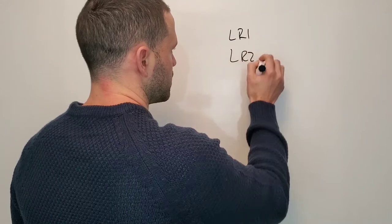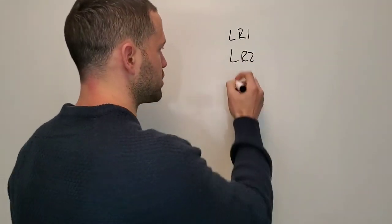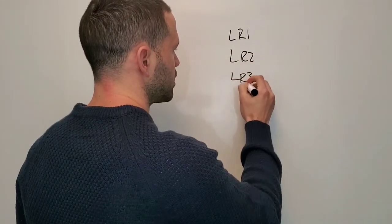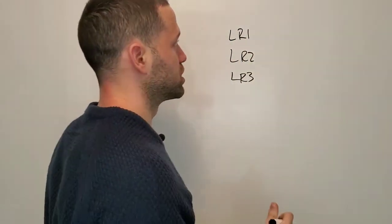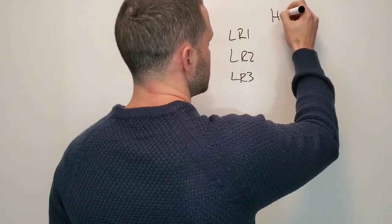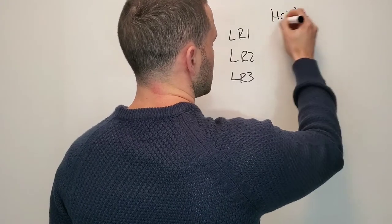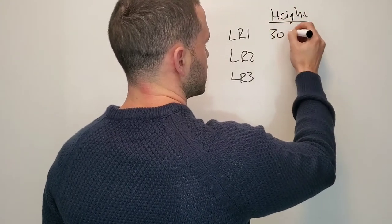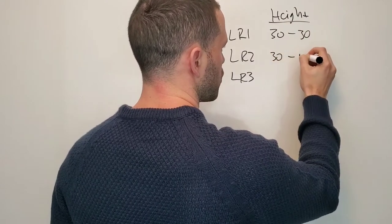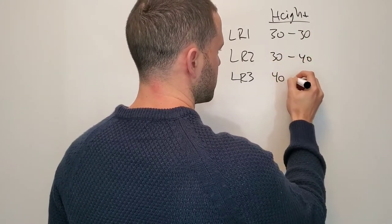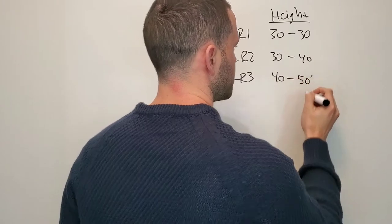LR1, LR2, and LR3 are the low-rise zones as they get more dense. The height limit for LR1 was 30 and remained at 30. For LR2, it went from 30 to 40. For LR3, it went from 40 to 50.